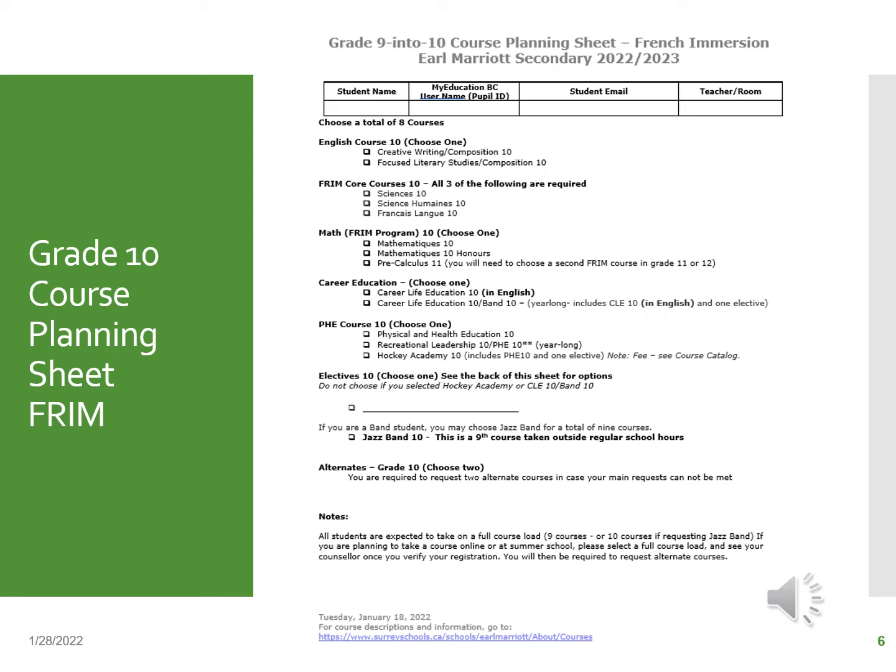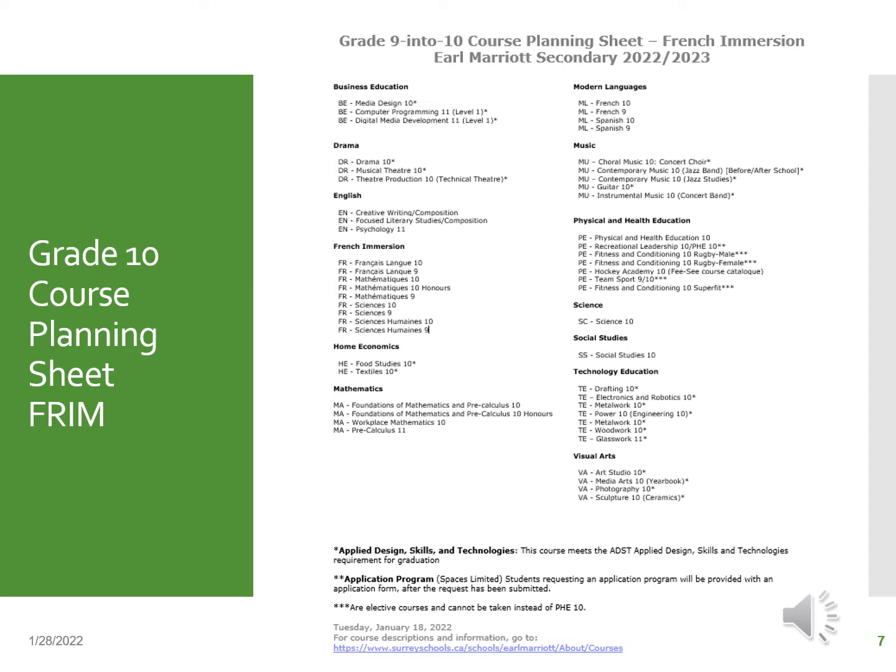This is an example of the course planning sheet for students going into grade 10 in the French immersion program. It lists the required courses that you must put in your course requests, and notes the amount of electives and alternates you need to choose. For the French immersion program, you will choose one elective but two alternates. The back of the sheet lists the elective and required courses you're allowed to choose from.